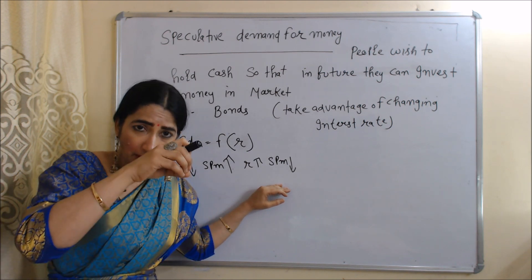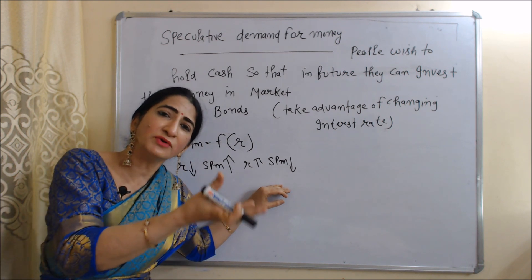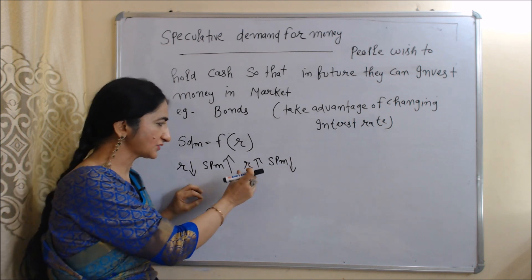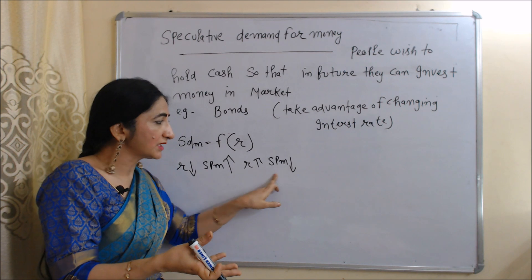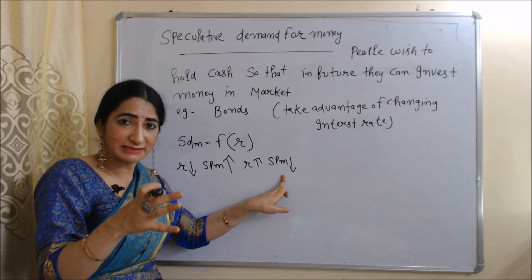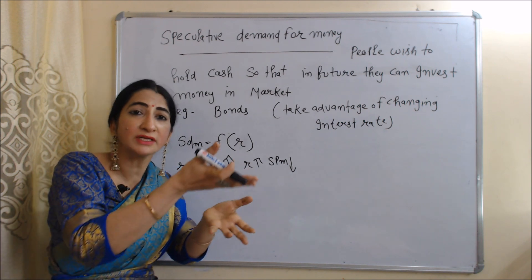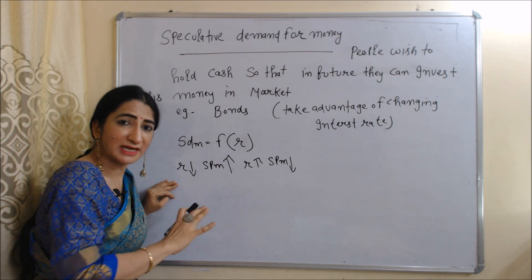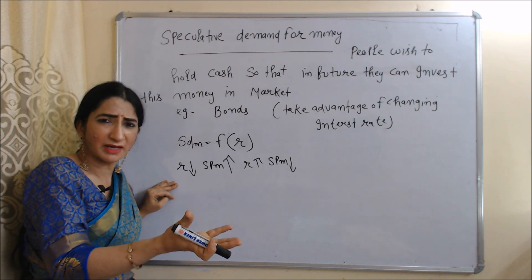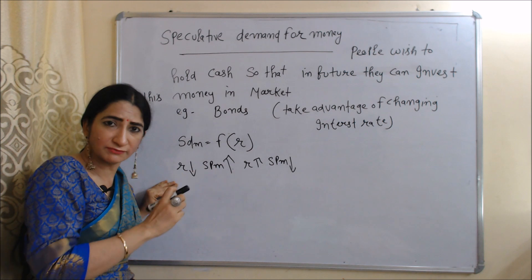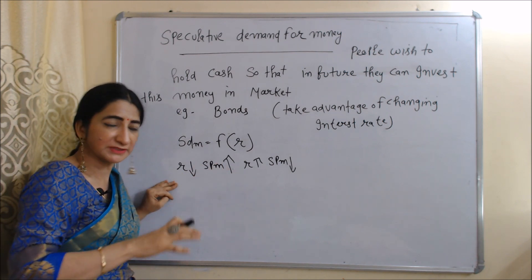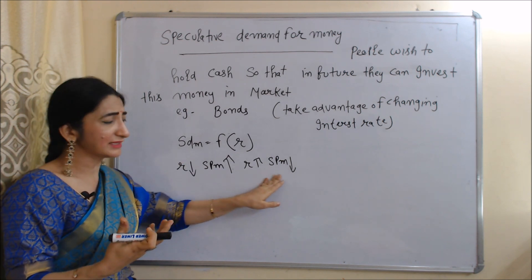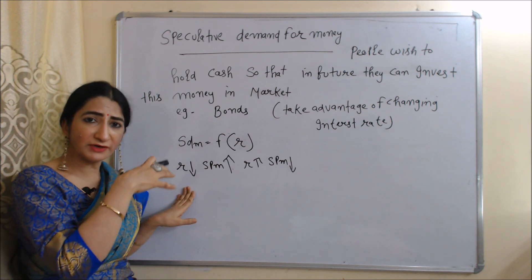When the interest rate is currently very high, speculative demand for money will be less — because if the interest rate is high presently, there is no reason to wait; people will invest in bonds immediately. That's why when interest rate is high, speculative demand for money is low: people hold less cash and invest more in the money market. On the other hand, if interest rate is very low, speculative demand for money will be high, because people will wait for a higher interest rate in the future and hold more money for speculative purposes.